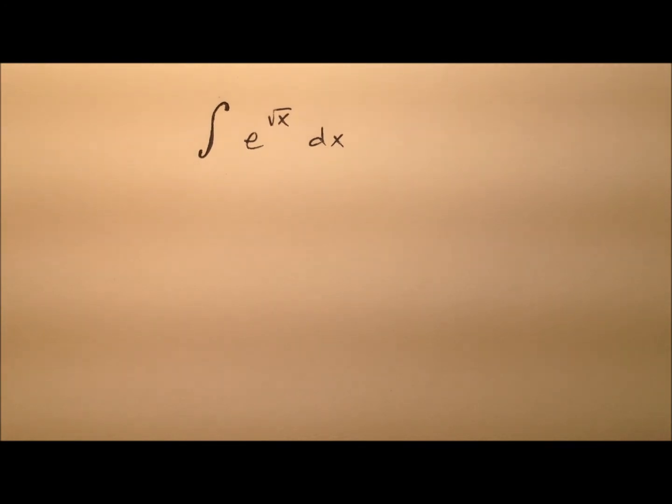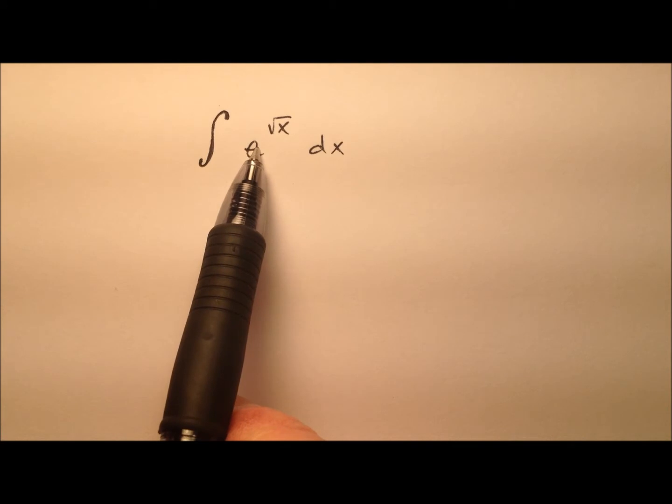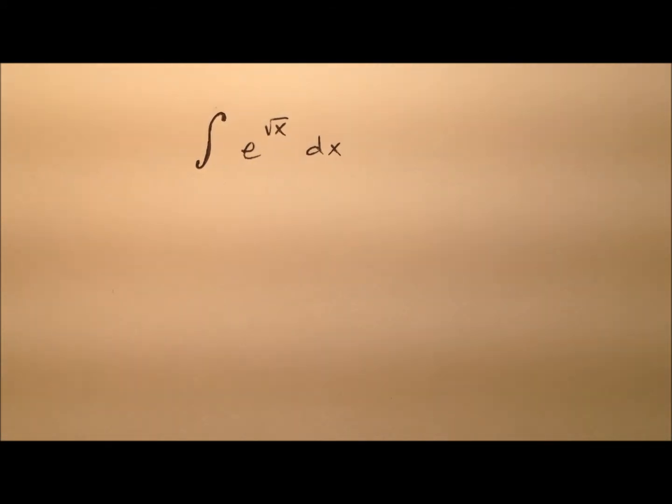In this example, we're going to find the indefinite integral here. So it looks like we have e to the power of the square root of x with respect to x. If you'd like to go ahead and try this problem first on your own, pause the video and do so, and then come on back and we'll work the solution together.